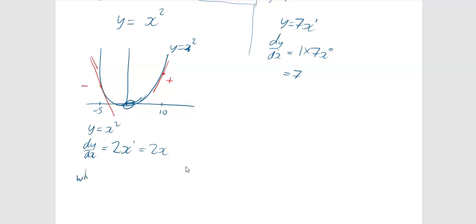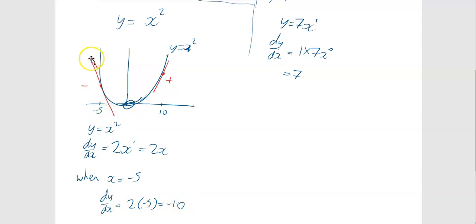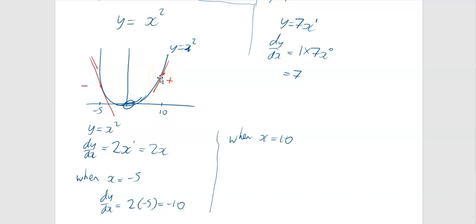Let's verify the gradient function at two points. When x equals minus 5: dy by dx equals 2 times minus 5, which is minus 10 — a negative gradient, consistent with the left side of the curve. When x equals 10: dy by dx equals 2 times 10, which is 20 — a positive gradient. And you can see the further right you go, the bigger the number, so the more extreme the gradient gets.